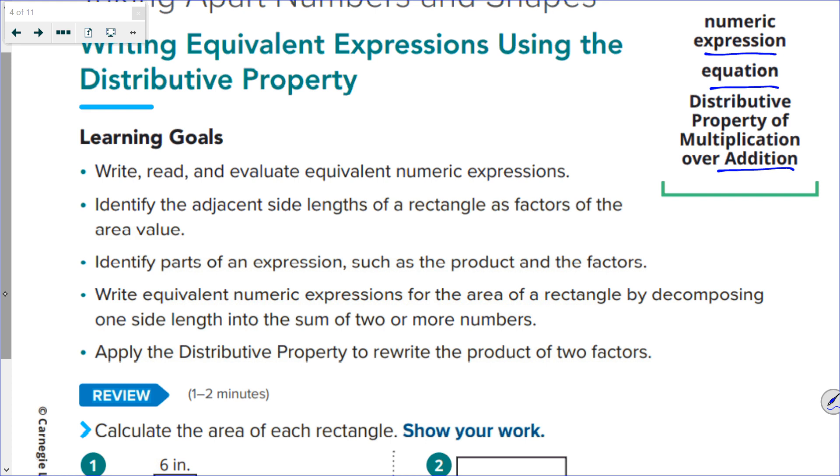Here's what we're trying to do today. Our learning goals: write, read, and evaluate equivalent numeric expressions. That's a whole bunch in one sentence. Who can give that to me in plain English? Good. So evaluate is finding the answer. Writing and reading, you should be able to understand. Evaluating is saying I solve it. Equivalent numeric expressions means ones that are the same or equal.